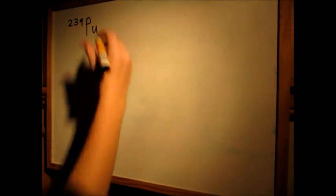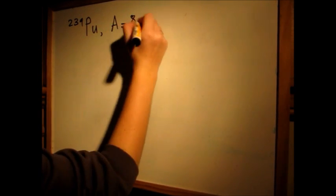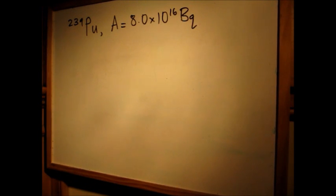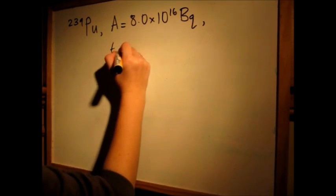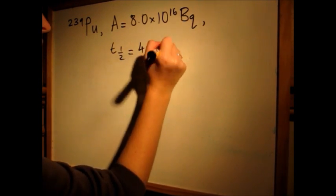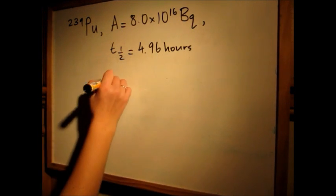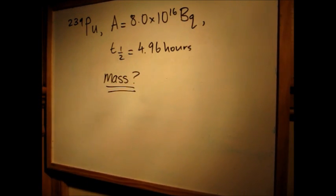Suppose you had plutonium-239, and it's radioactive. It has an activity of 8.0 times 10^16 becquerels and a half-life of 4.96 hours. You're asked what is the mass that gives this activity?